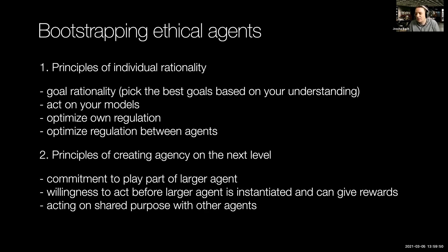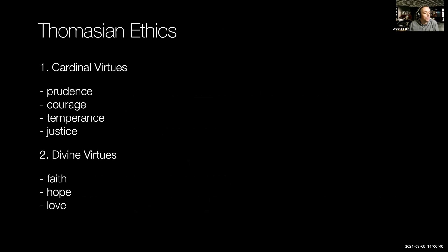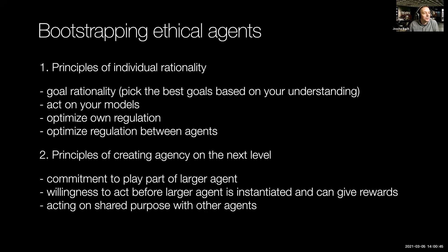And then you need to do this with the other agents around you — you need to actively look for agents that serve the same higher-level agency, link up with them, and support them in that quest. These principles have been discovered by Thomas Aquinas, an important Catholic philosopher who took in Aristotle, realized that Aristotle had been distorted by early Catholic mythology beyond recognition, and tried to translate this into something intelligible. He calls these principles of individual rationality the cardinal virtues: prudence, courage, temperance, and justice. Prudence is goal rationality; courage is the willingness to act on your models; temperance is the optimization of your own regulation; and justice is the optimization of regulation between agents.